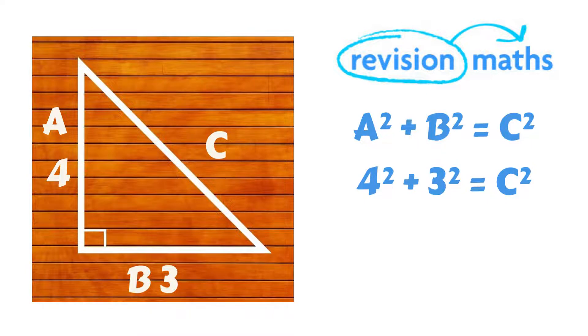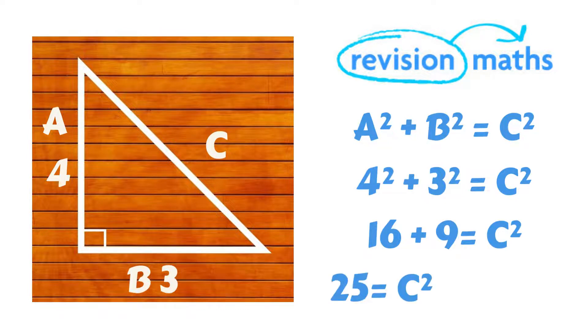So therefore our formula is 4² + 3² = C². We can simplify the formula with 4² becoming 16 and 3² becoming 9. So 16 + 9 = C² which means 25 = C².